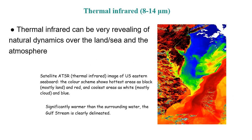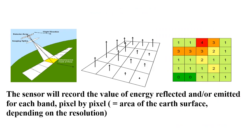Thermal infrared can be very interesting for studying nature dynamics that involve changes or differences in temperature. For example, in this picture you can see the contrast between the cold Labrador Current and the warm Gulf Stream on the west side of the Atlantic Ocean, showing the sharp contrast between them and how they mix together at around the same latitude as New York. The sensors in the satellite record the value of energy reflected or emitted by the surface for each band, pixel by pixel.